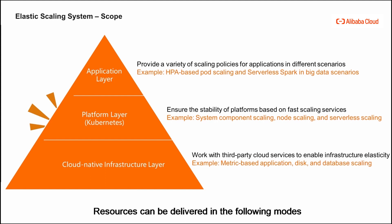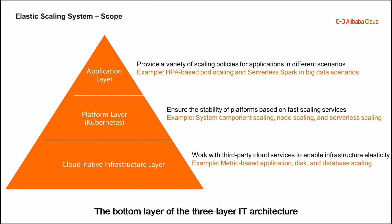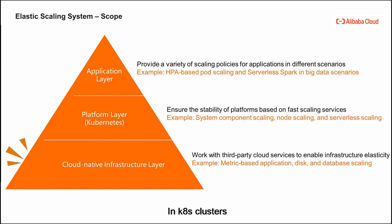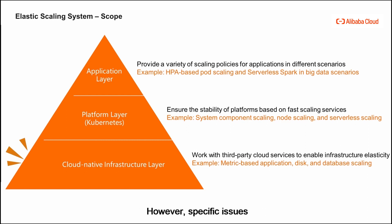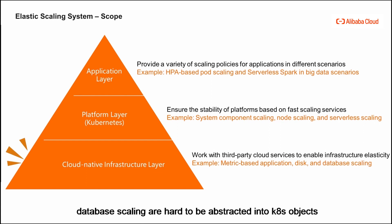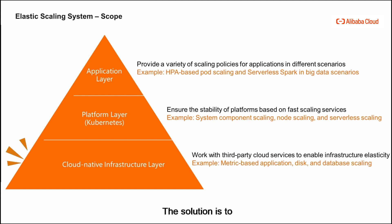Resources can be delivered in the following modes: node and nodeless. The bottom layer of the three-layer IT architecture is the cloud-native infrastructure layer. In K8S clusters, issues are abstracted into K8S objects; however, specific issues such as those related to storage middleware and database scaling are hard to abstract into K8S objects. The solution is to implement scaling at the cloud-native infrastructure layer.